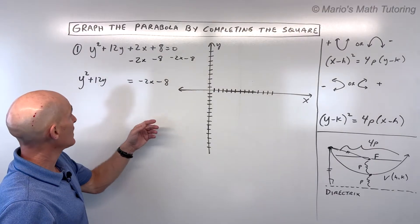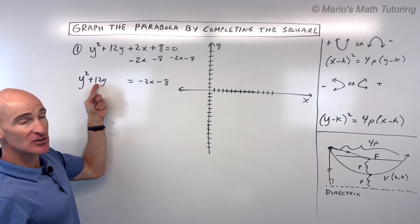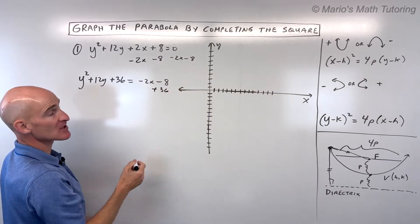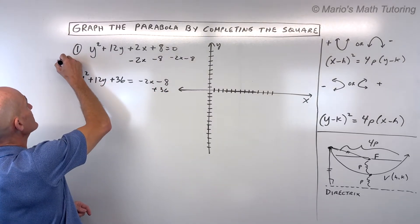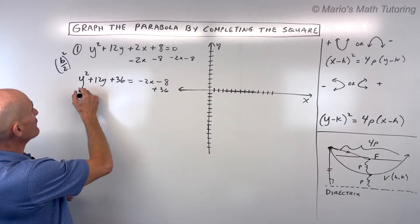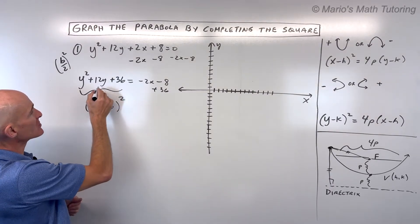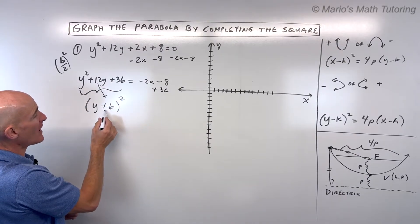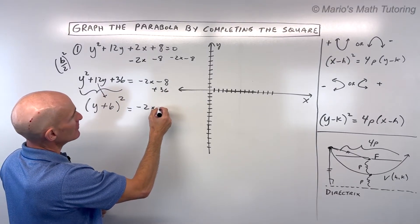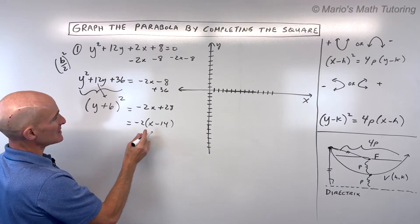Now here's where completing the square comes in. Take the coefficient in front of y, divide it by 2, and square it. So 12 divided by 2 is 6, and 6² = 36. If I add 36 to the left, I have to add 36 to the right to keep the equation balanced. The left side factors as a perfect square: (y + 6)². On the right side we have −2x + 28, and factoring out −2 gives −2(x − 14).